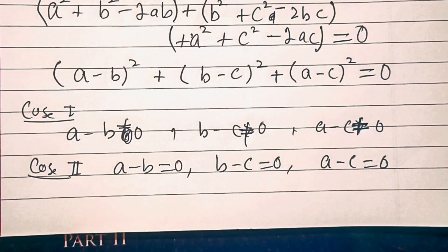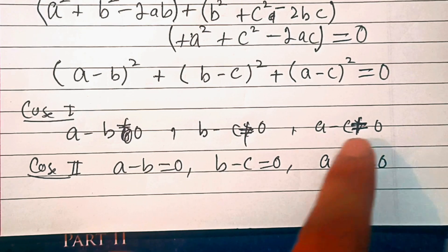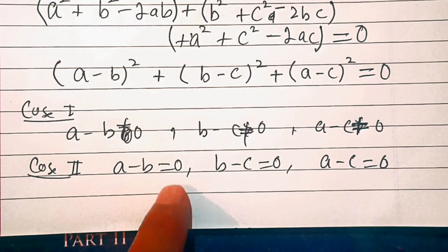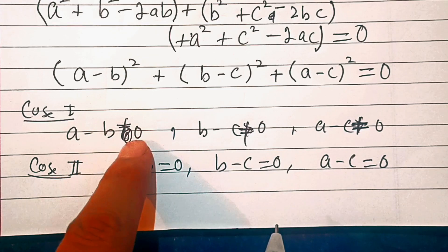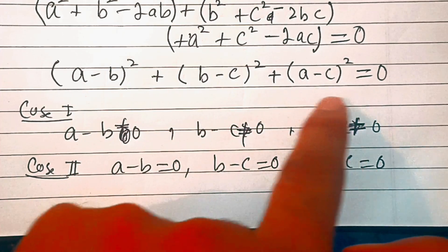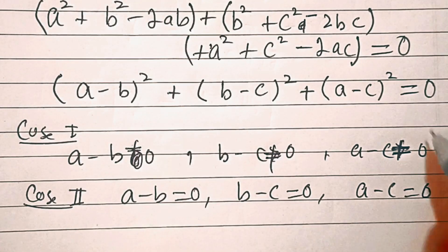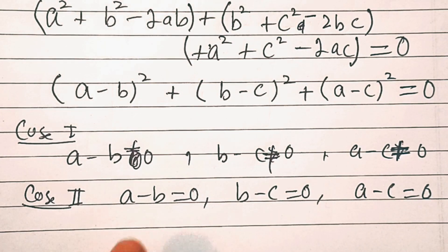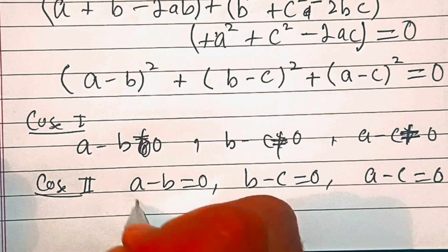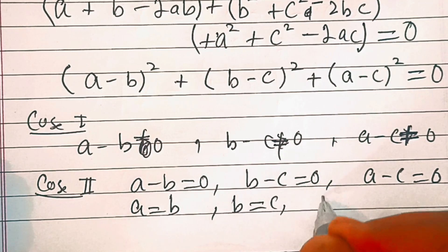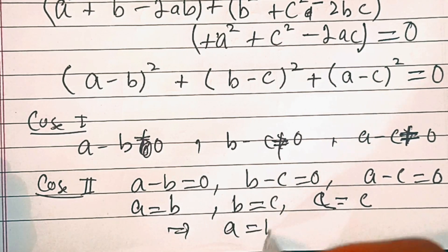Now two cases arise. Case one: if a − b ≠ 0, b − c ≠ 0, and a − c ≠ 0, then the left-hand side would always be greater than 0, but the right-hand side is 0, so this case is not possible. The only possibility is case two: a − b = 0, b − c = 0, and a − c = 0, meaning a = b, b = c, and a = c, which further means a = b = c.